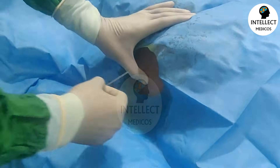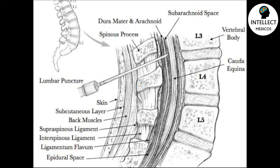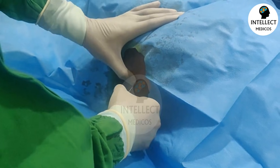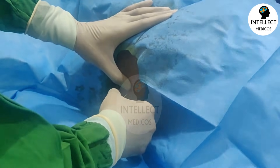The bevel should point towards the flank of the patient while going inside in the lateral position, and the direction of the needle should be towards the umbilicus. Before going inside, know the layers the spinal needle will pierce: skin, subcutaneous layer, back muscles, supraspinous ligament, interspinous ligament, and then the strongest ligament - the ligamentum flavum. Once you pierce that you get a loss of resistance, meaning you are in the epidural space. After that there is a thin dura; once you pierce the dura you get CSF dribbling out, meaning you are in the subarachnoid space.